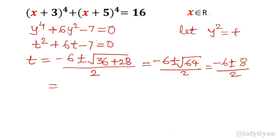This equals -3 ± 4, so the value will be 1 or -7. Now t was our assumption, that was y^2, so in place of t I will write y^2 = 1 and y^2 = -7.